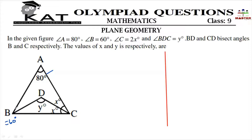Angle B is split into 2 equal angles, so angle B is 60 degrees divided into 30 degrees each. Similarly, angle C is 2x degrees, also split into 2 equal angles.